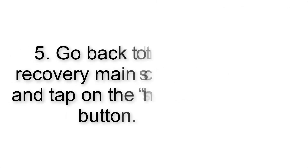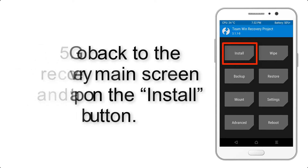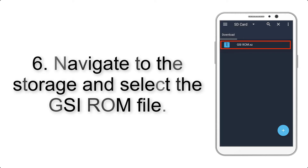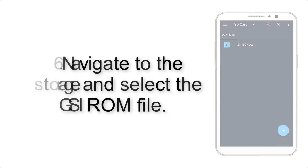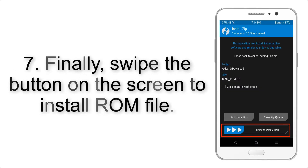Step 4: Swipe the button to wipe the device. Step 5: Go back to the recovery main screen and tap on the Install button. Step 6: Navigate to the storage and select the GSI ROM file.